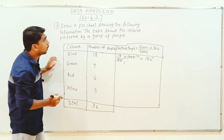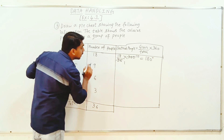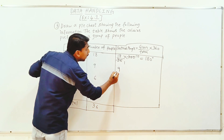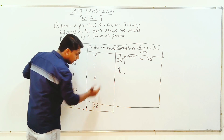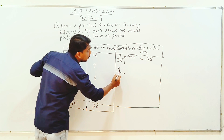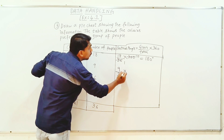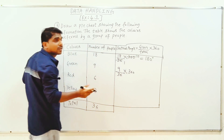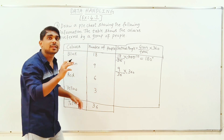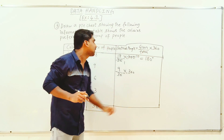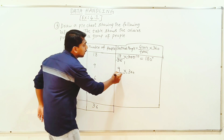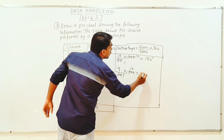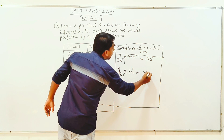Next, green color. I am going to write the central angle. Given value divided by total, into 360. Cancel 3610, and 9 into 10 is 90 degrees.